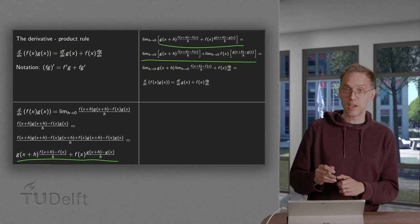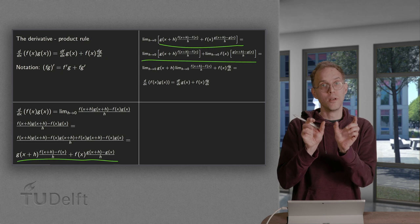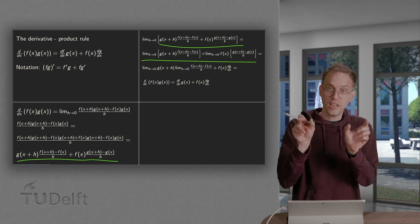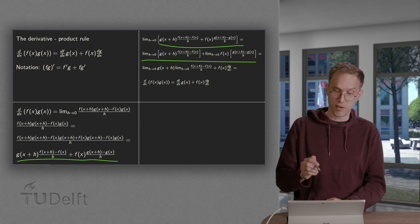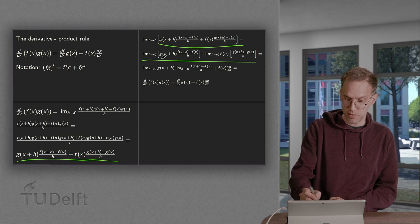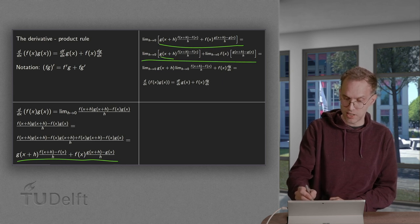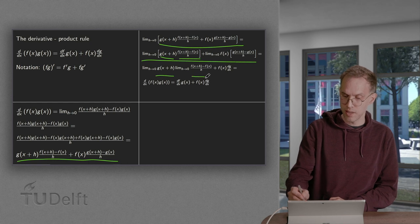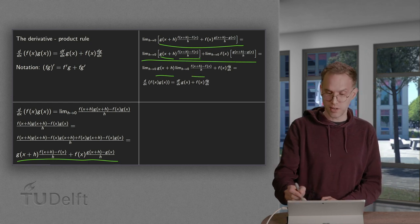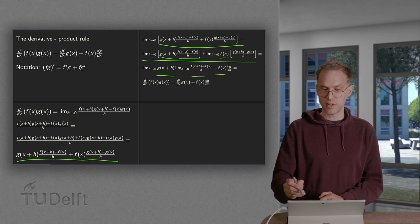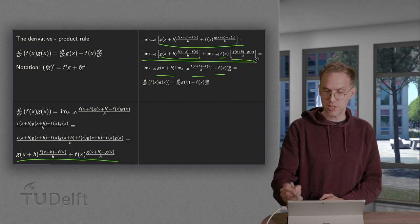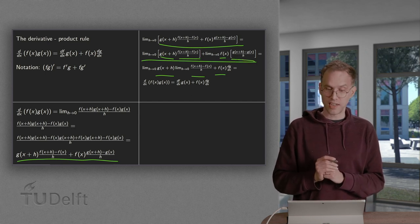Then we can use the product rule for limits, like the limit of a product equals the product of limits if both exist. So we have the limit of g at x plus h times this other limit. And the f of x can be taken in front of the limit, and if you take the limit h to 0, you have g prime, dg/dx.